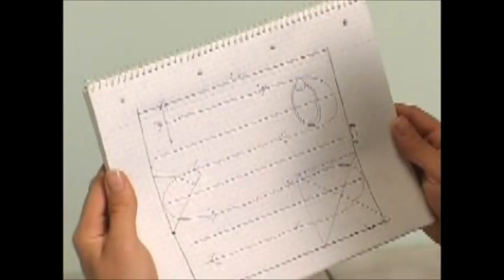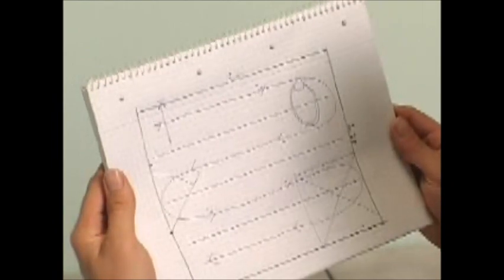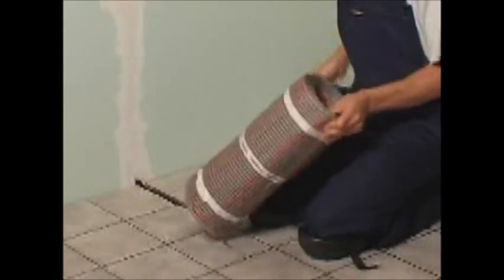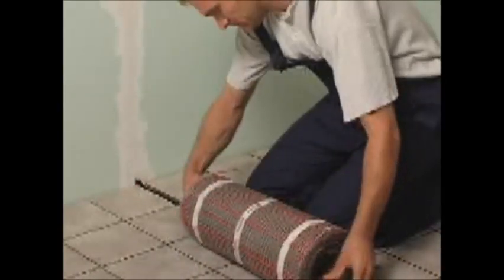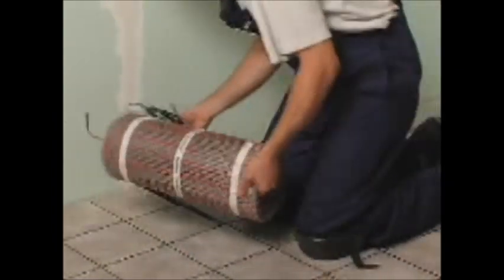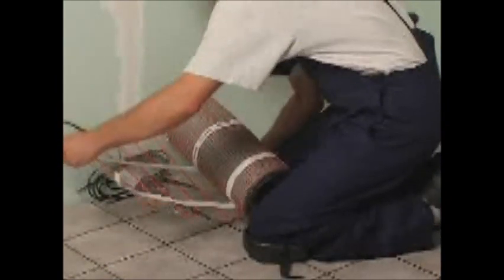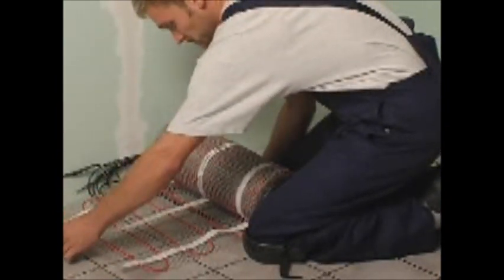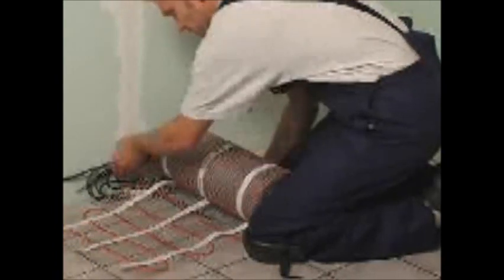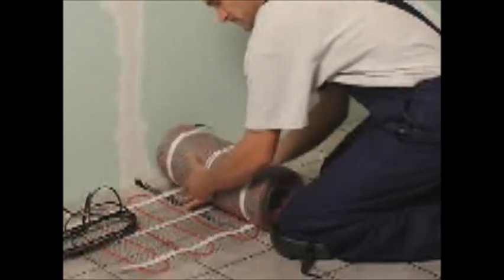Use the drawing you made to calculate where to start laying out the mat. Remove the protective plastic wrapping from the heat mat. Start as close to the junction box as possible. Place the mat on the floor with the adhesive side downwards. It's important that the groove for the sensor lies exactly between two heating cables.